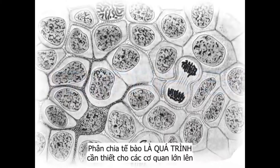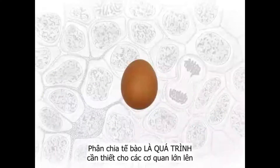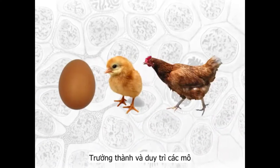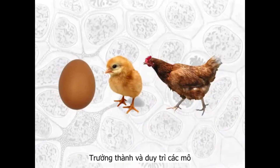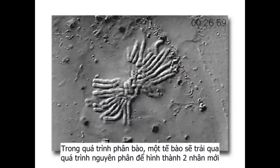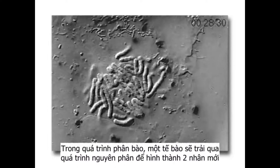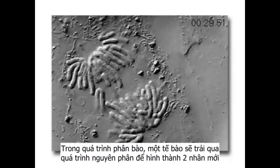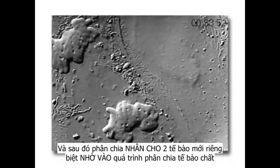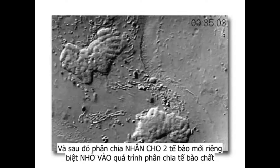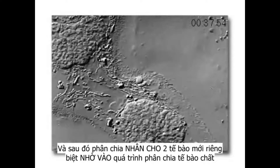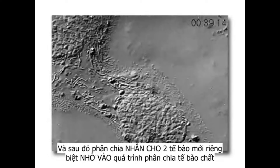Cell division is required for an organism to grow, mature, and maintain tissues. During the mitotic phase, a cell will undergo mitosis to form two new nuclei, and then divide to form two new individual cells during cytokinesis.